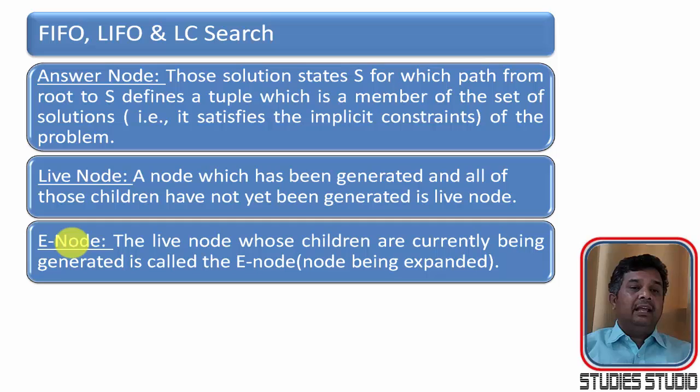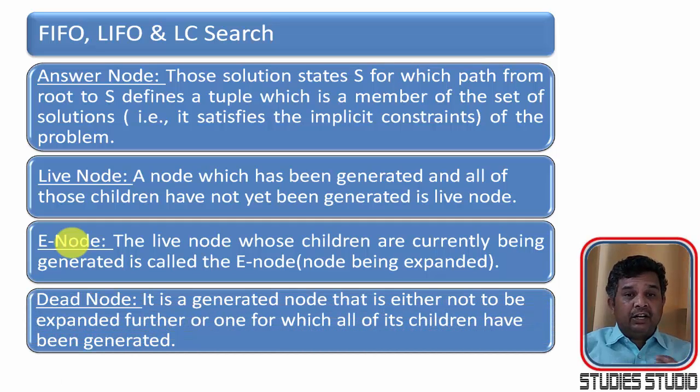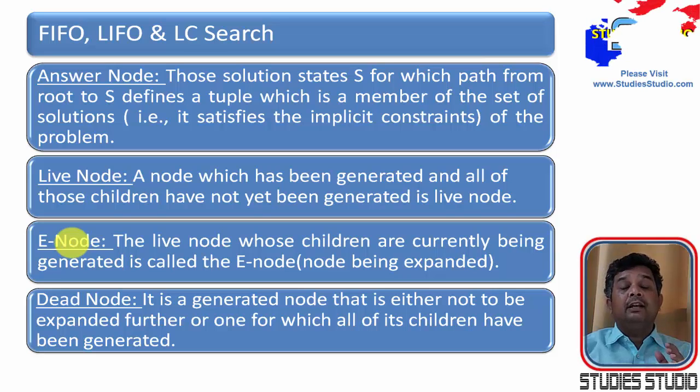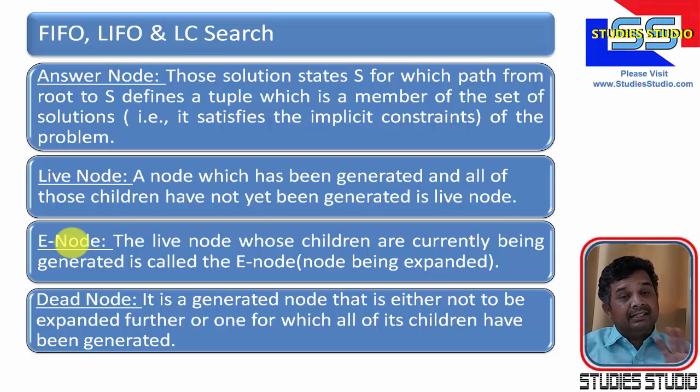And lastly the dead node. It is a generated node. It is either not to be expanded further or one for which all of its children have been generated. It means either by some kind of pruning technique I came to a conclusion that I need not expand this particular node, then I will say this is a dead node. Or if all the children of that particular node have been generated, then I am not going to explore the node once more. So that's why I will say that node is also a dead node.